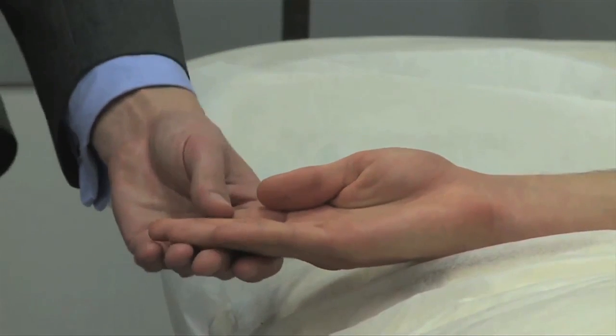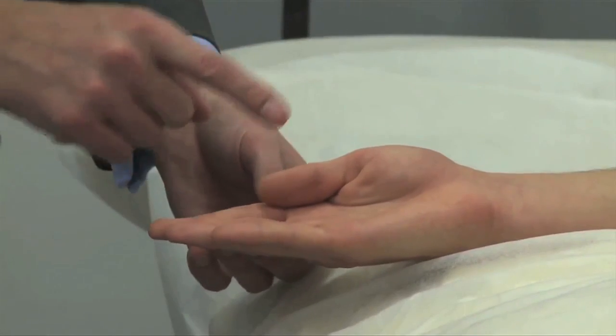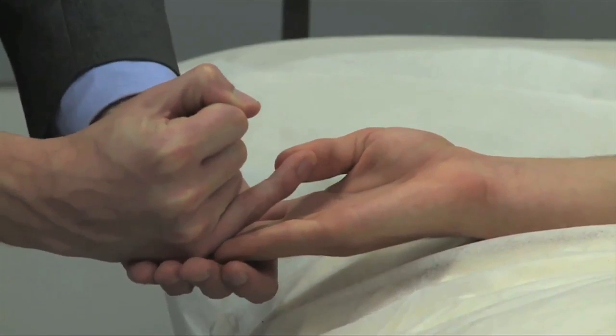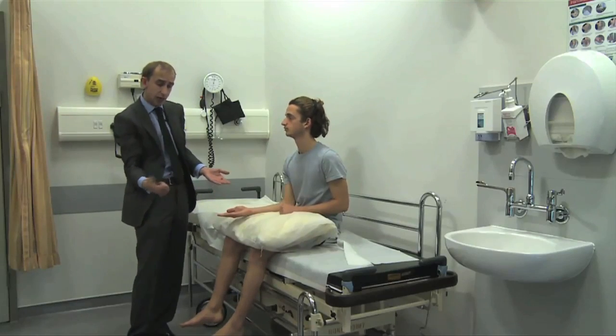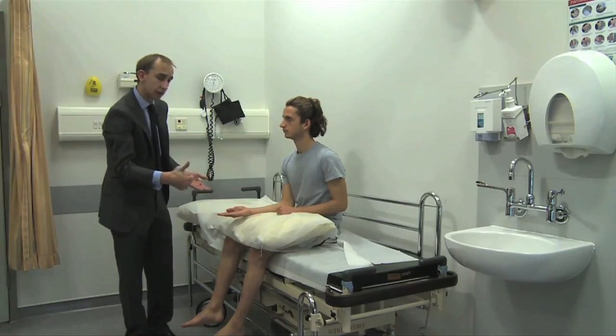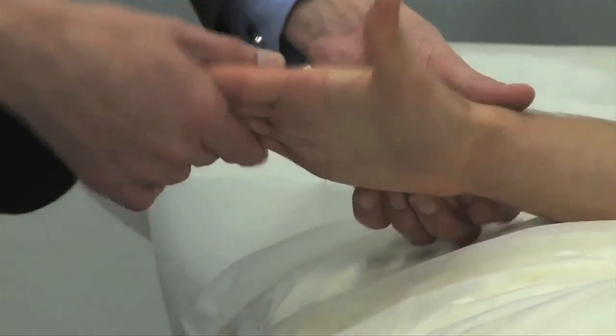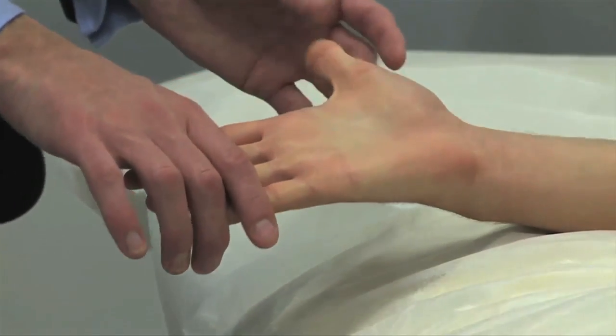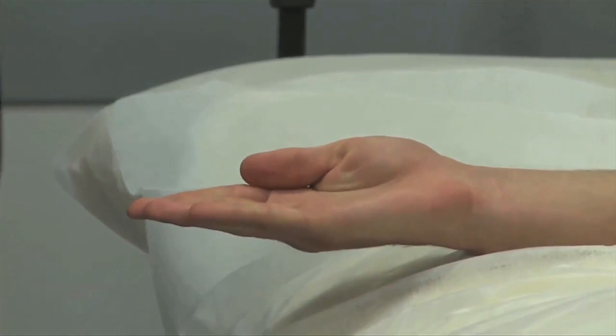To test ulnar nerve function through the thumb, you want to do adductor pollicis, so it must adduct towards the third finger. Can you bring your finger in towards me? That's adductor pollicis, ulnar nerve tested. And back. To test radial nerve function, you extend it away from the thumb. I often say, just hitch a lift. So can you extend your finger as far as you can, just turn it over so we can see, and you can see the tendon of extensor pollicis longus. That's a quick way of doing the motor aspect of it.